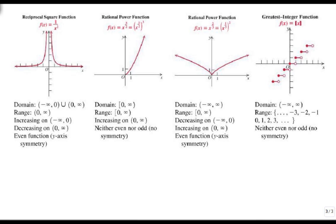The last four, we have the reciprocal square, which is like the reciprocal, but instead of coming down, it's going up. It's also missing the zero from its domain, and it's everything above zero for its range. It increased up to the zero, and then it decreased down from the zero, and it's an even function.